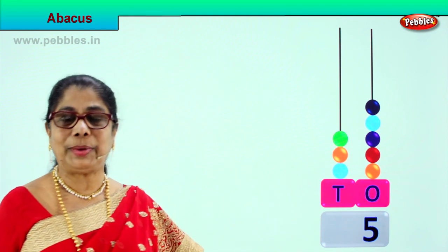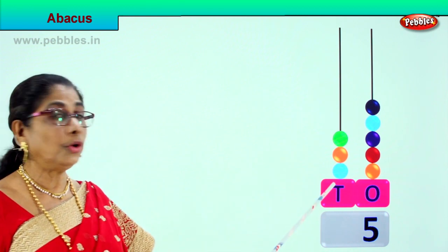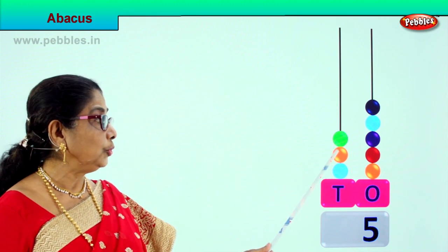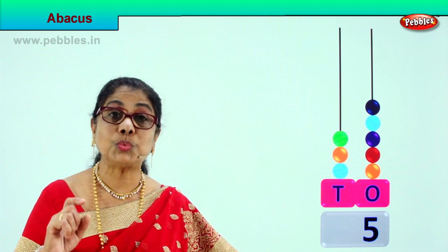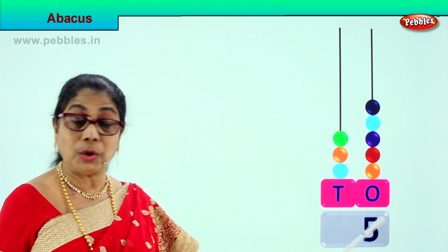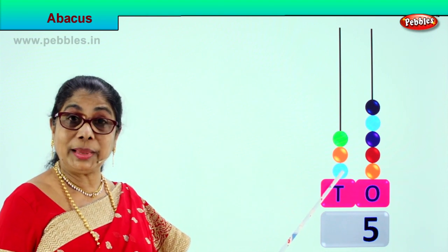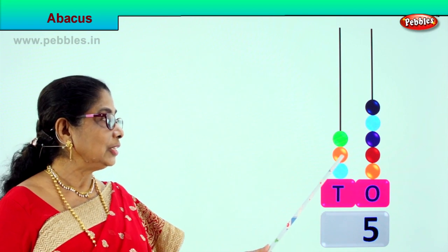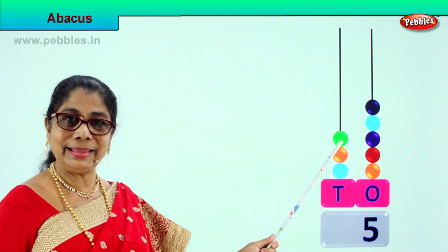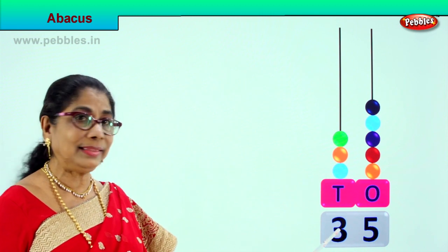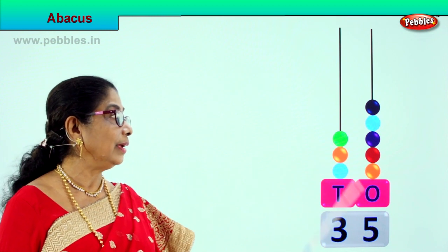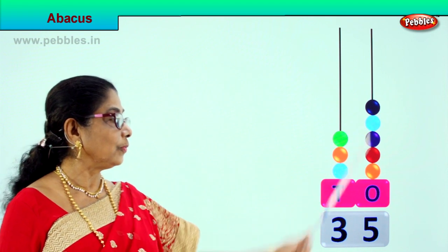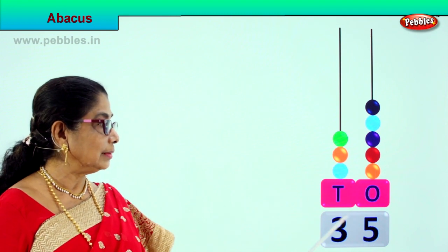Now we go to the tens place — the second rod on the abacus is the tens place. How many beads are there? There are 1, 2, and 3. Each bead is 1 ten. Let's count: 10, 20, 30. So we write 3 here — 3 beads, 30. 30 and 5 is 35. 3 tens, 5 ones — 35.